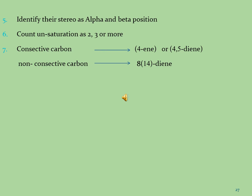Tip 6: Count unsaturations — how many total double bonds are present within the steroid molecule, and check how many are consecutive and how many non-consecutive. If the double bond is at carbon-4 position, it will be written in brackets as '(4)-ene.' If two consecutive double bonds are at carbon-4 and carbon-5, they are written as '(4,5)-diene.' If non-consecutive double bonds are at positions 8 and 14, the greater number 14 is written in brackets and the smaller number 8 outside, written at the end as 'diene.'